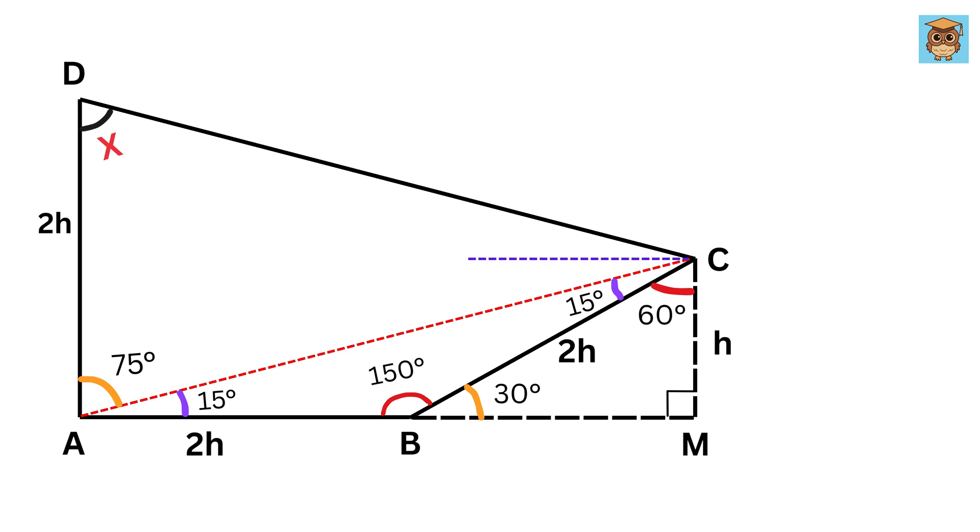Finally, drop a perpendicular from point C to side DA like this, and call this point as N. What do you think will be the length of piece AN? Look properly. It will be equal to segment CM, which is H, and thus AN equals H. Also, we have DA equals 2 times H, which we can also write as DN plus AN or DN plus H. Therefore, DN equals H as well.